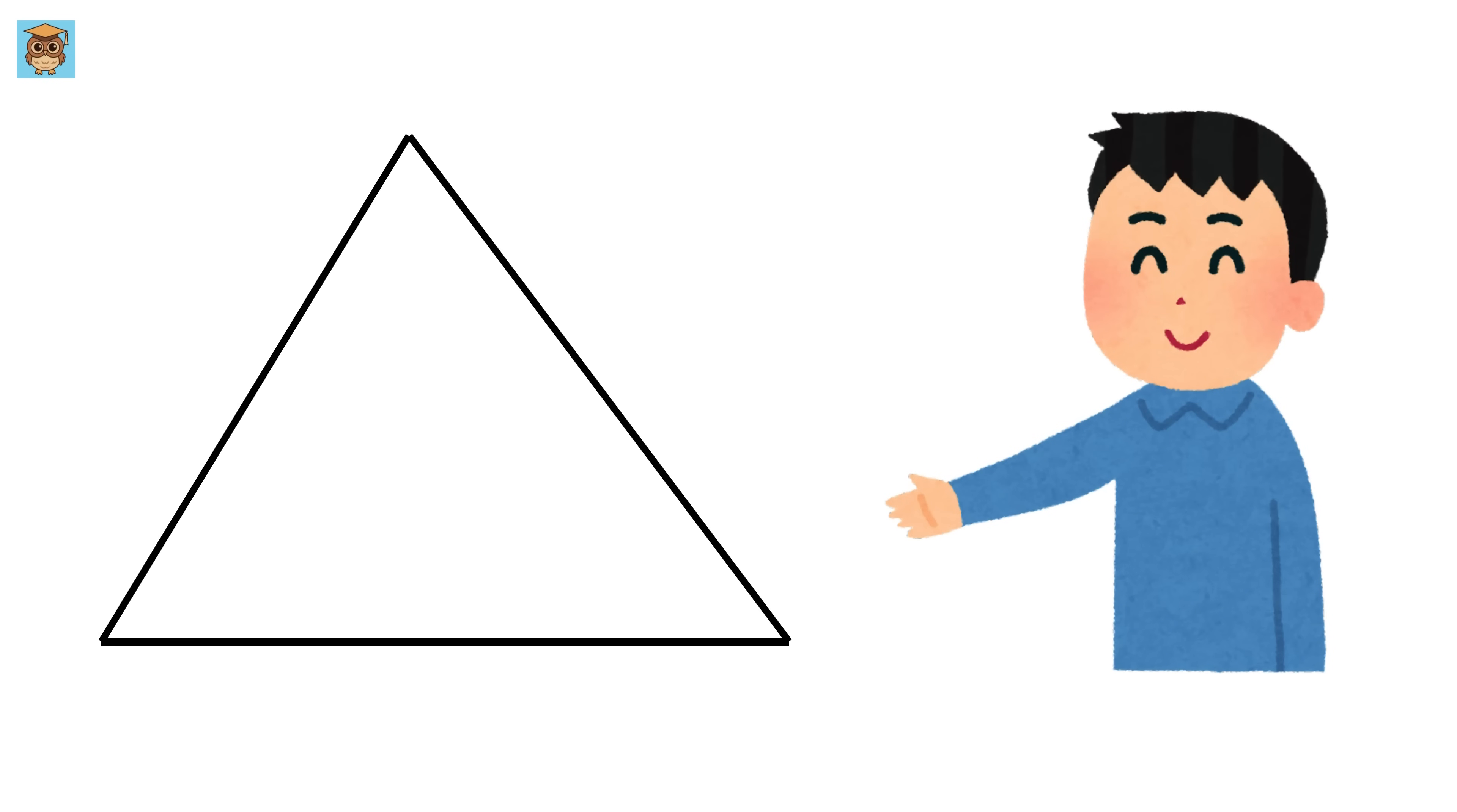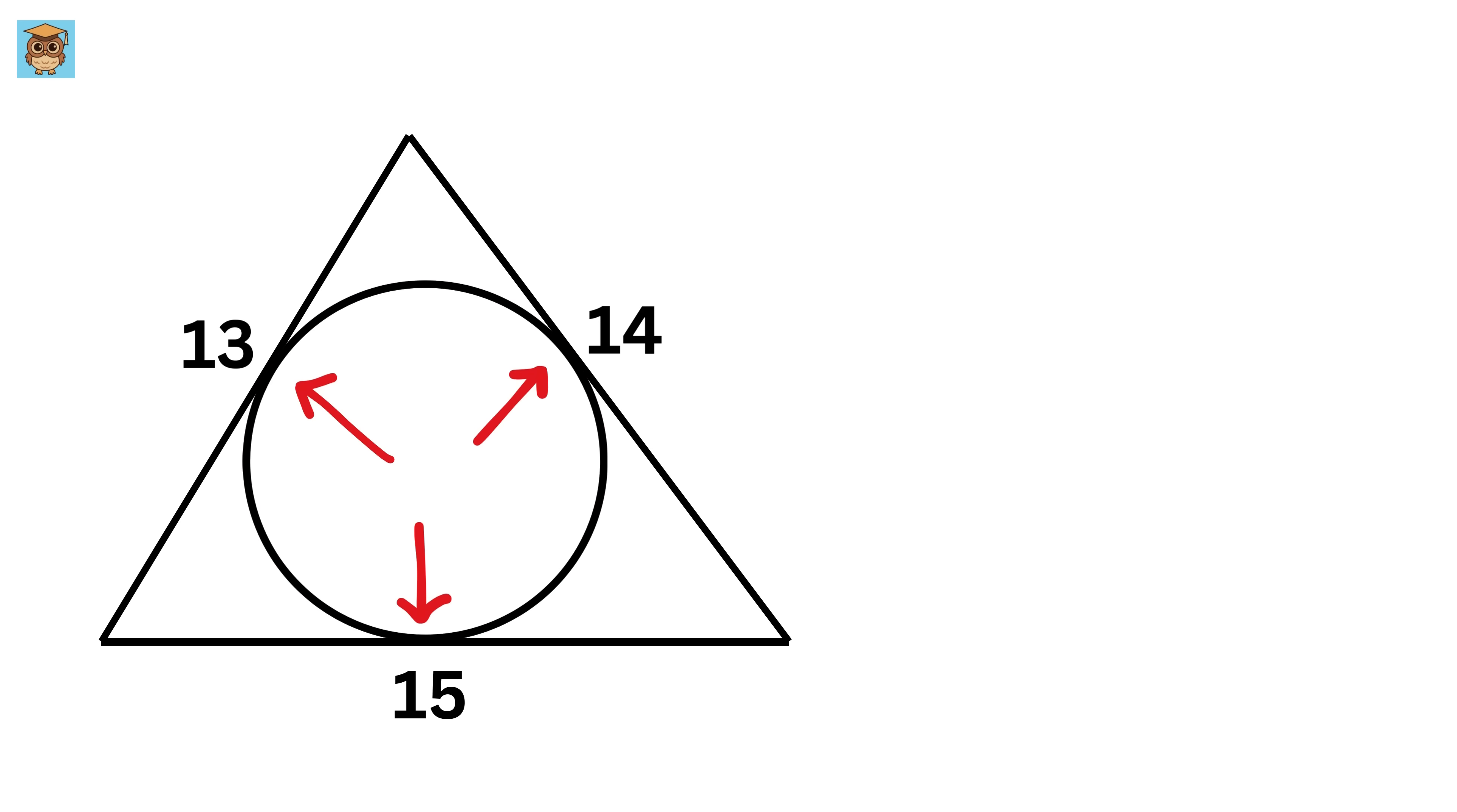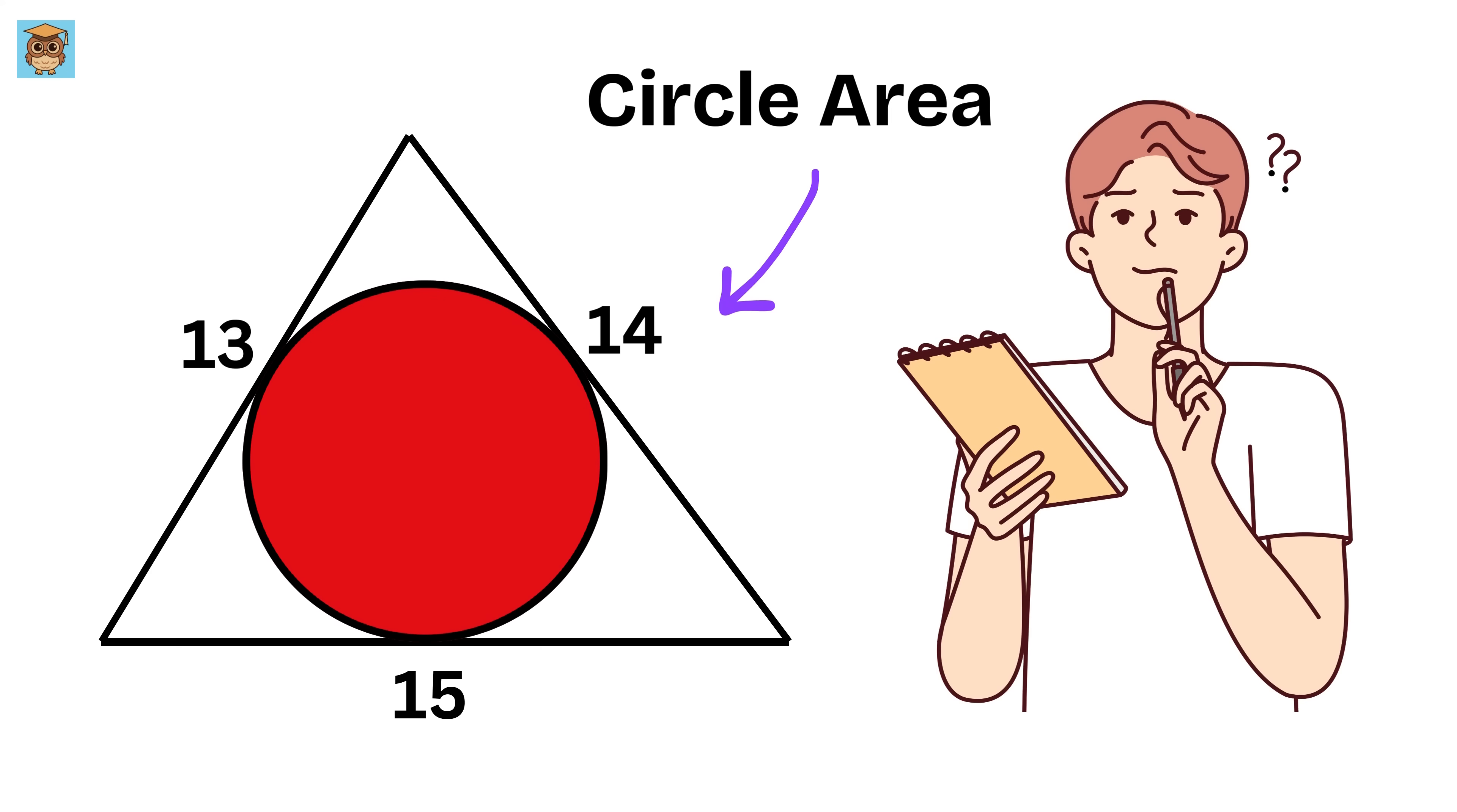We have a triangle whose sides are of length 13, 14, and 15 units. Now we draw a circle like this such that all the sides of the triangle are tangent to this circle, meaning they touch the circle at a single point. Our job is to find the area of this circle.